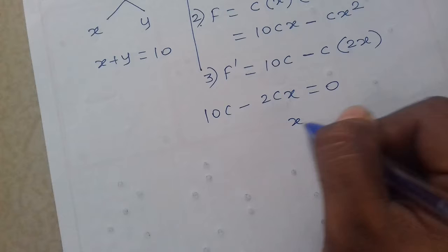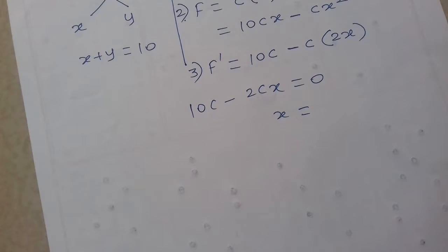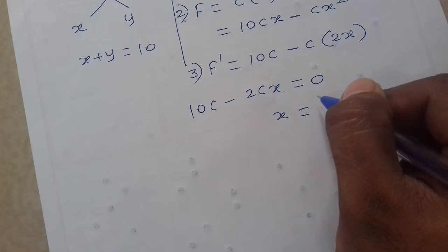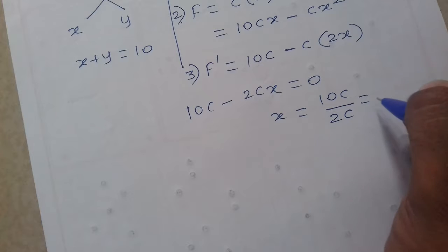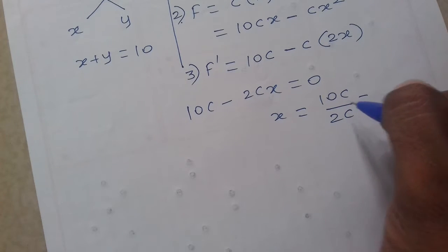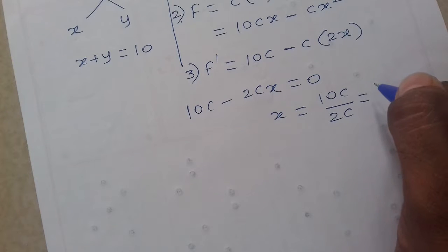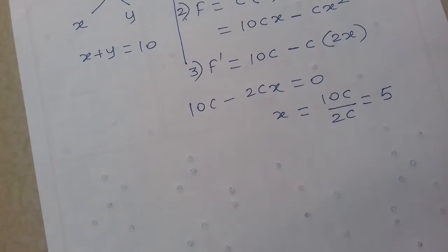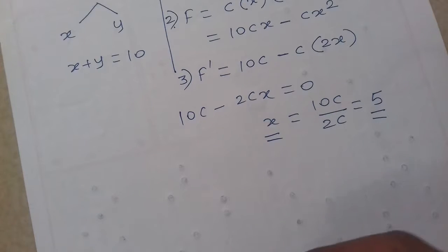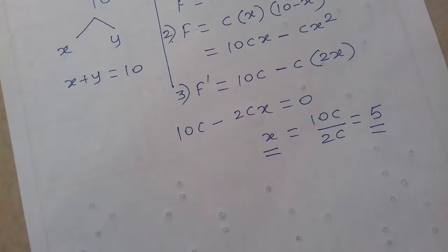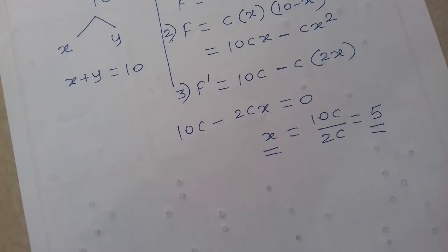First derivative should be zero, so 10C minus 2Cx is equal to zero. By calculating for x, we get x equal to 10C upon 2C. C cancel ho gaya, so 10 upon 2 is 5. When x is 5, the first derivative is zero - that means either function is maximum or function is minimum at x equal to 5. That we will determine from the double derivative.